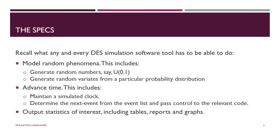Specifically, for discrete event simulation, any software tool has to be able to model random phenomena. It has to be able to generate random numbers and generate random variants by sampling from particular probability distributions. Such a tool also has to be able to move time — these simulations run over time, they're not static. There has to be a simulated clock, and we have to be able to ask for statistics at particular moments in time.